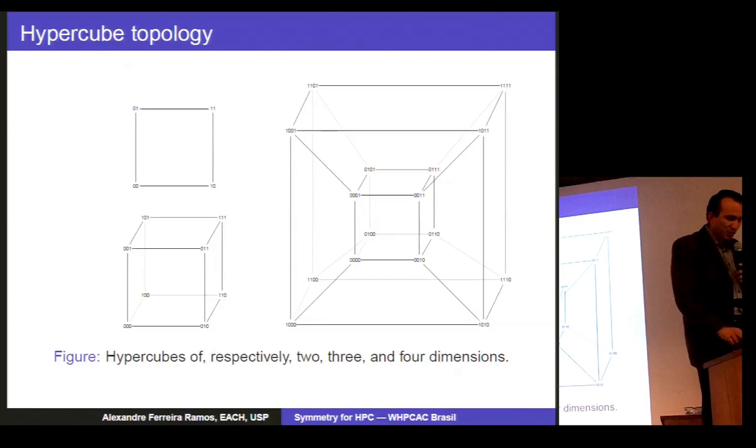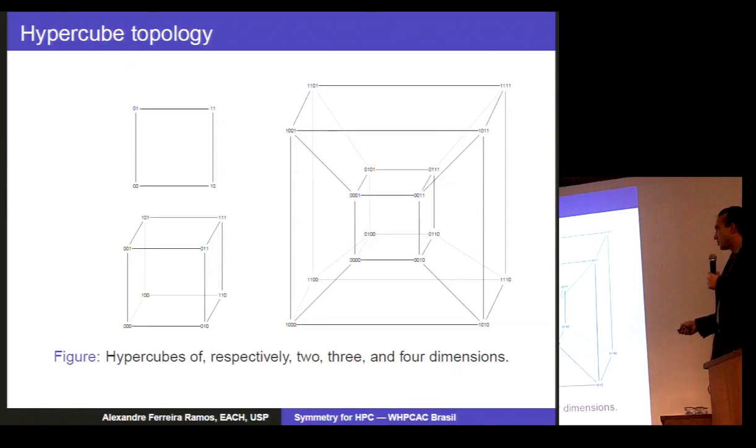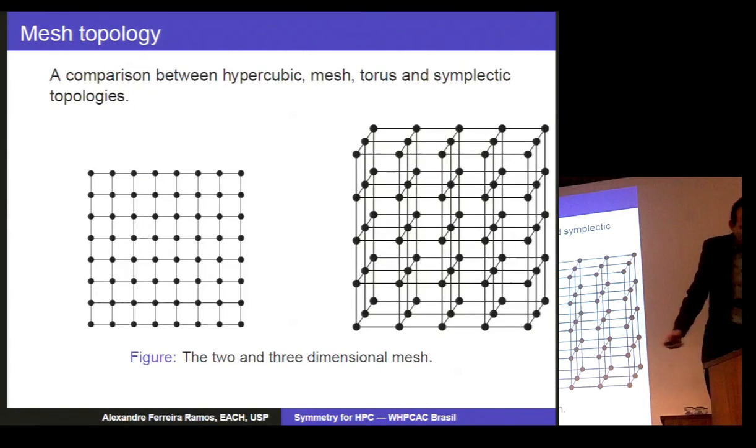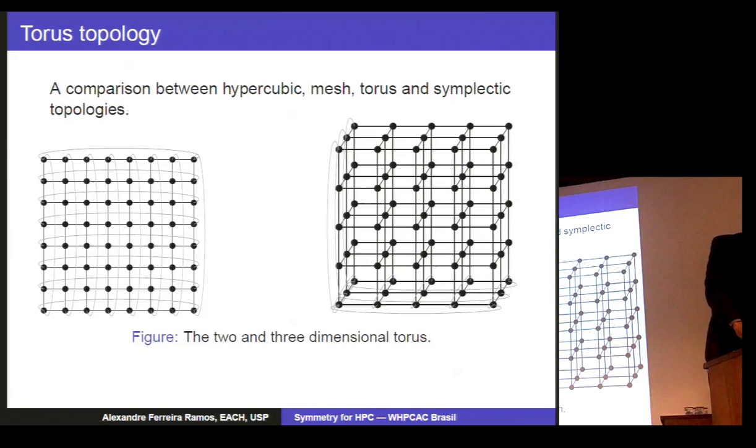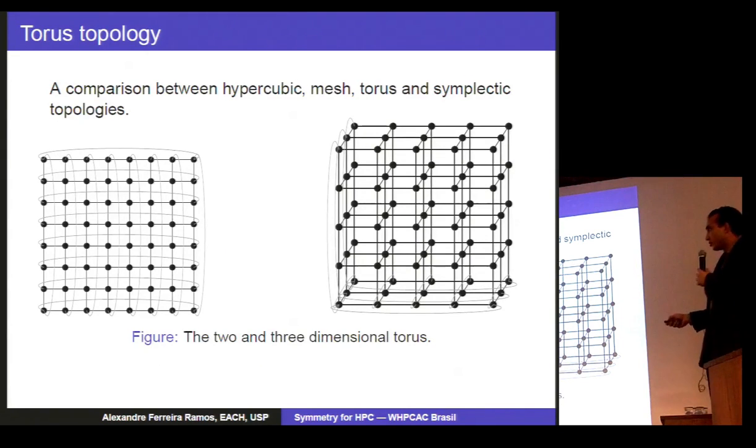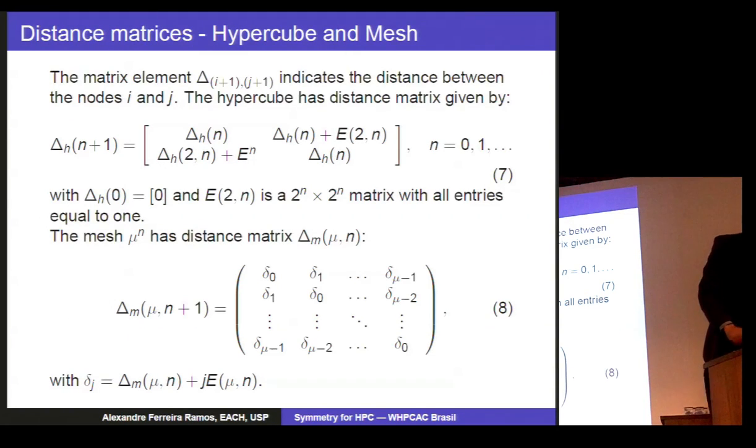Just to have a picture in mind, here is the hypercube in 2 dimensions, 3 dimensions, 4 dimensions. The mesh topology in 2 dimensions and 3 dimensions. And the torus topology also in 2 dimensions and 3 dimensions. As we have seen already, the symplectic topology.